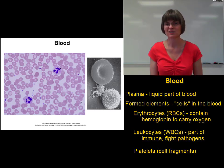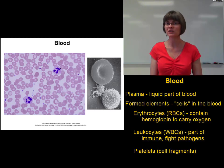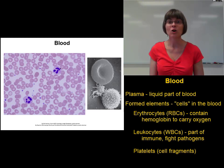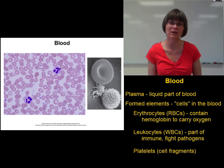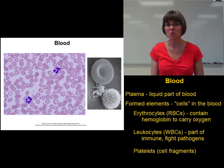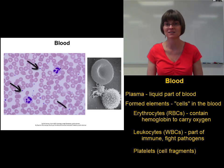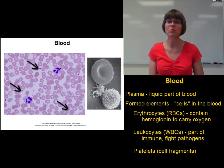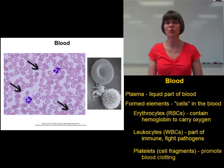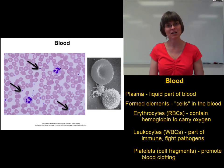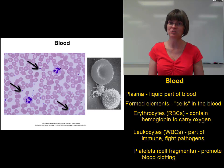The smallest of the formed elements are not even true cells — they're really just cell fragments, and those are the platelets. Platelets show up on a microscope slide as small purple dots. Platelets are important because they are needed for blood clotting, which keeps you from bleeding out every time you cut yourself.